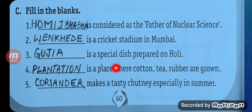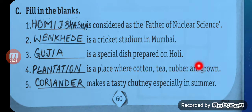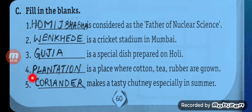Blank is a place where cotton, tea, and rubber are grown. The answer is Plantation — P-L-A-N-T-A-T-I-O-N.